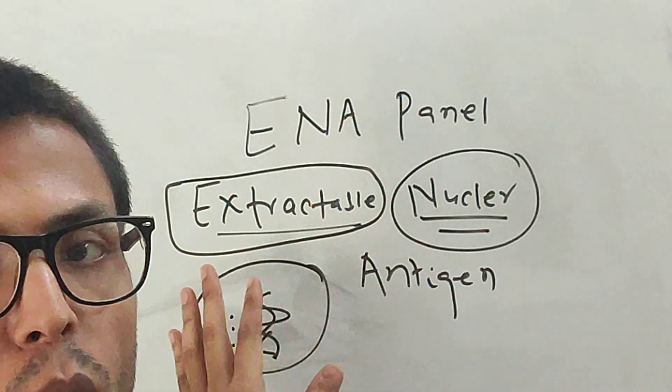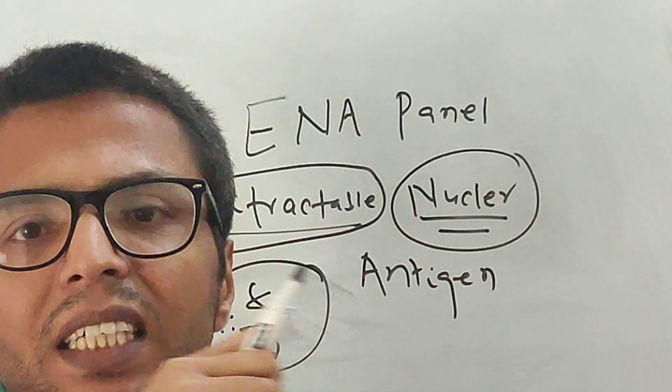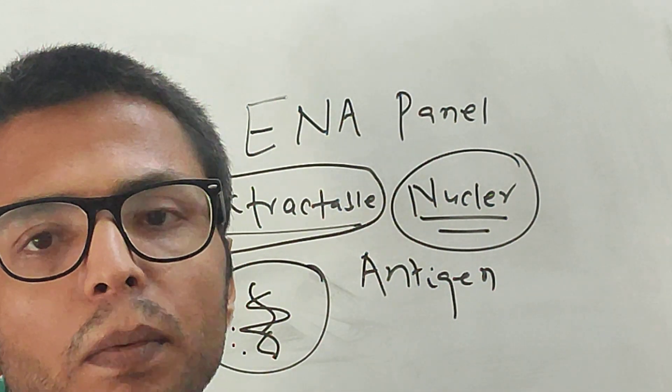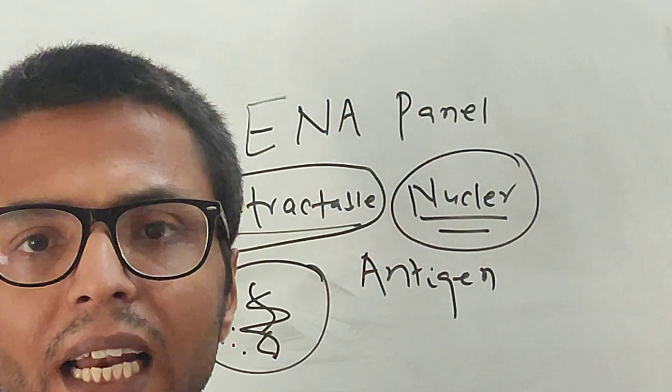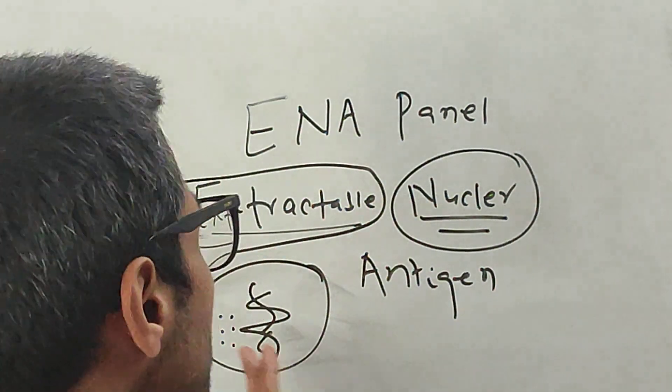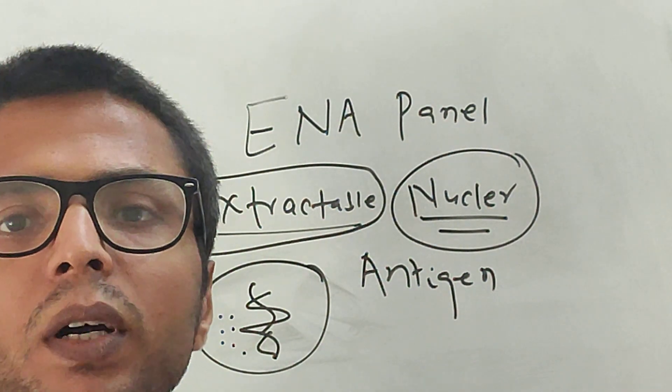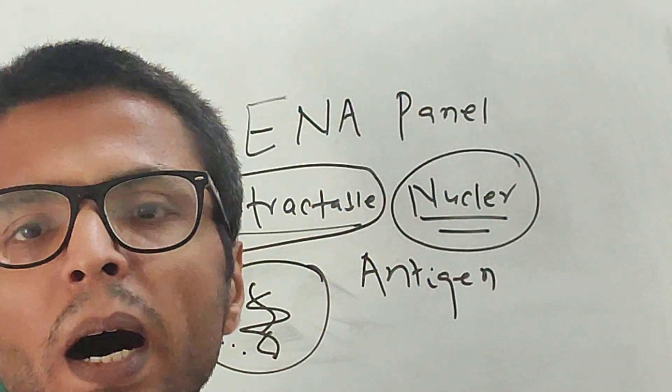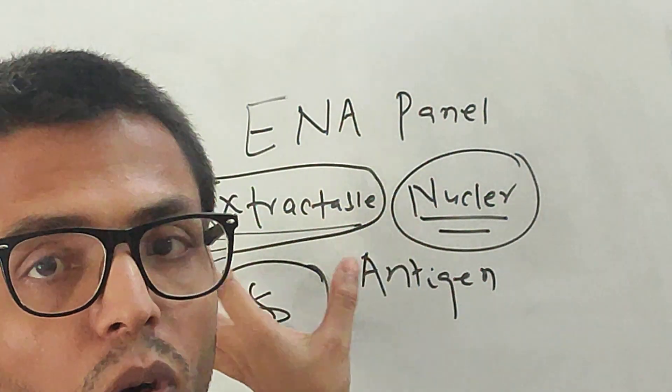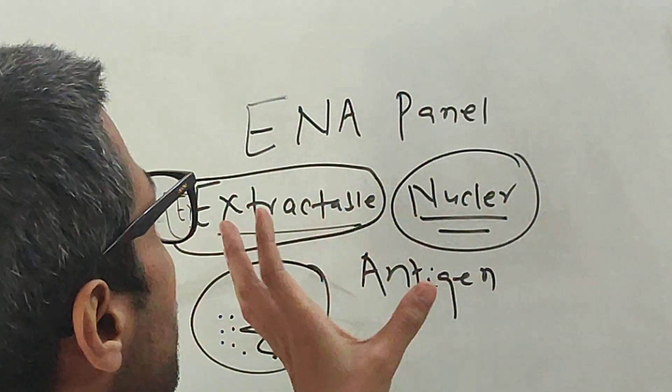Previously they used to lyse the cell and extract these nuclear antigens with saline. But nowadays they use other methods like ELISA, Western blot, hemagglutination, so we don't use that extractable saline method of extraction anymore. But still the historical term extractable is still there in this panel test.